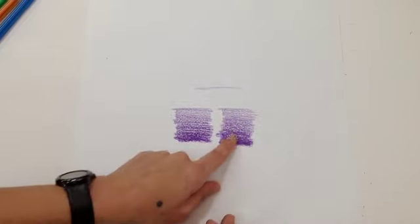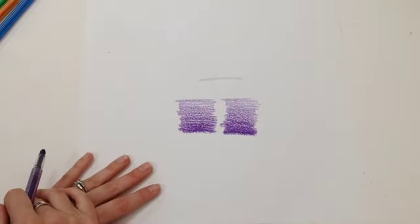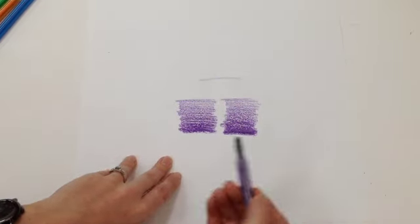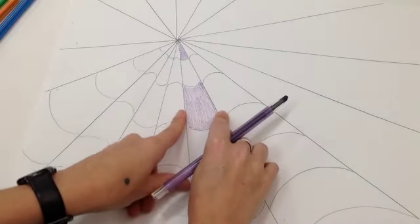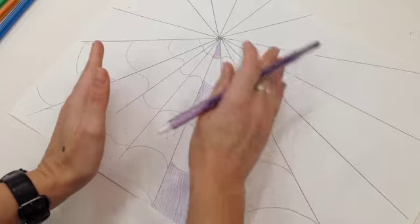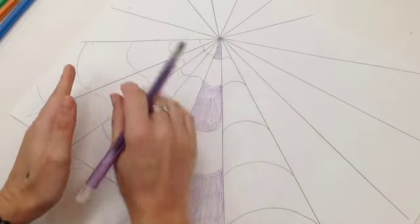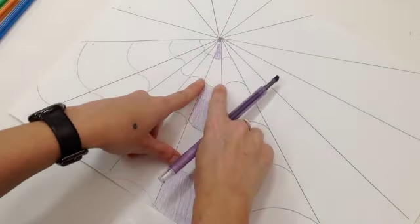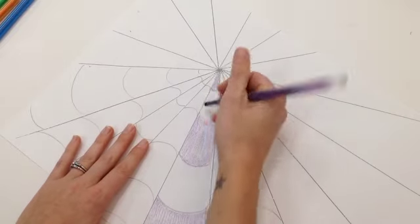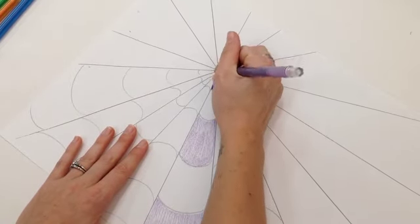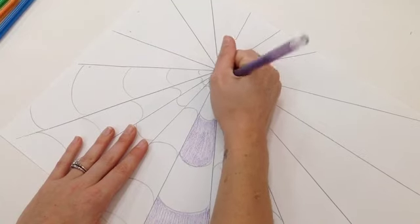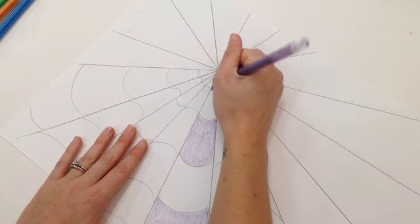All right this is what we're going to do in our sections however we're going to be doing them on either side because we want this to appear as though it's three-dimensional. So I want it to look like it's darker on the outside and lighter on the middle.